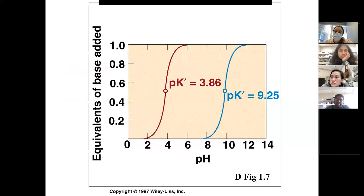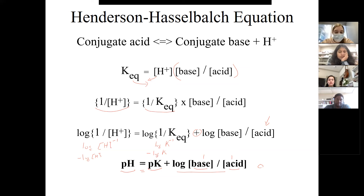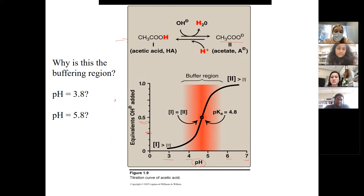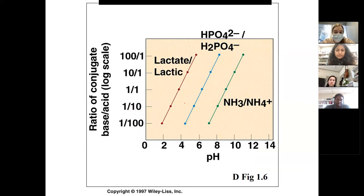If there's more acid than base, the ratio [A⁻]/[HA] is less than one, the log is negative, and the pH is smaller than the pK. If there's more base than acid, the ratio is greater than one, the log is positive, and the pH is bigger than the pK. On the acid side of the pK you mostly have the acid form; on the basic side you mostly have the basic form - that's reflected in the ratio.